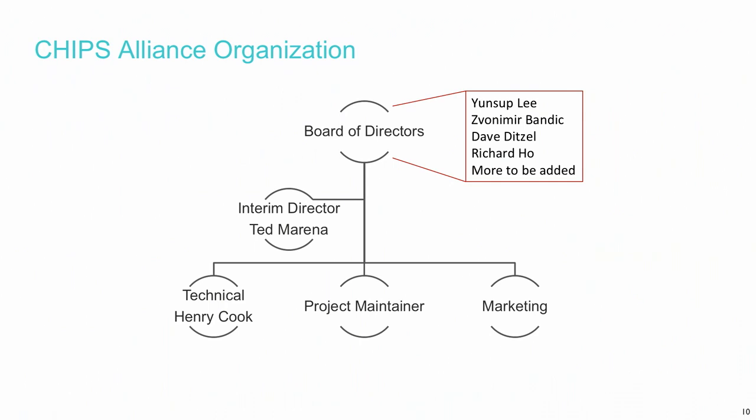This is the current organization — there are four board members: Jensap, Zvonimir, Dave Ditzel from Esperanto, and Richard Ho from Google. Those are the first four members of the board. There are openings for other board members. I'm the interim director until they find someone. The technical committee is headed up by Henry Cook, who's at SiFive — we're excited to have him on board. This gives you a framework for how the organization has begun and how we'll continue to build it out.